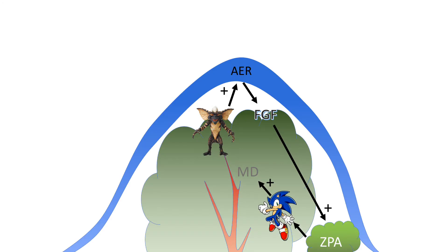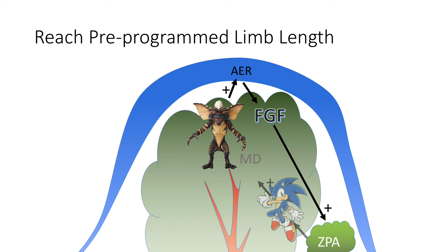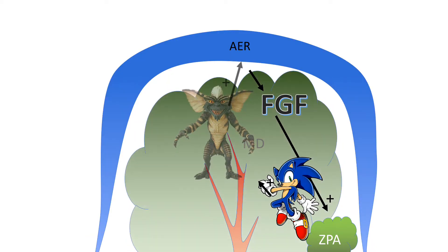So how does it end? You have the normal churn of gremlin, fibroblast growth factor, and sonic hedgehog reaching a pre-programmed limb length. Then the limb bud — the limb terminus — starts to swell, and that's what gives you a hand paddle.